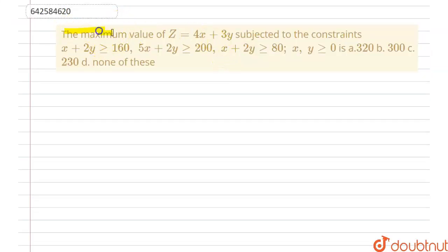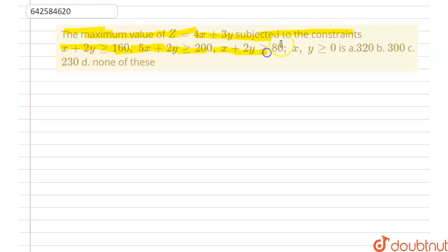The question says that the maximum value of Z equals 4x plus 3y, subjected to the constraints: x plus 2y should be greater than or equal to 160, 5x plus 2y should be greater than or equal to 200, and x plus 2y should be greater than or equal to 80, and x, y should be greater than or equal to 0.